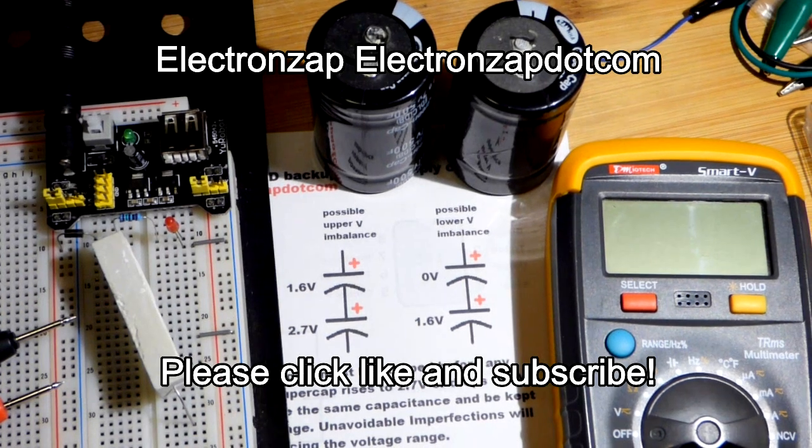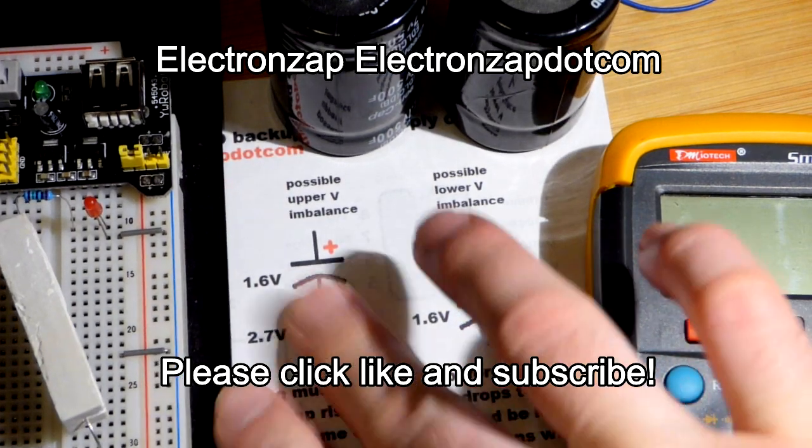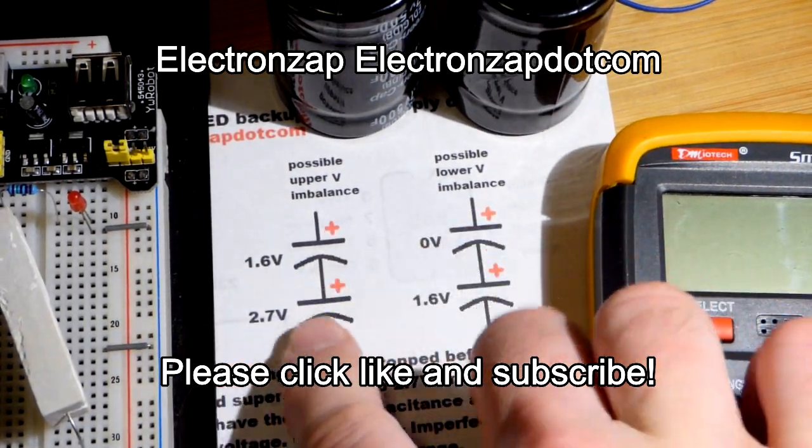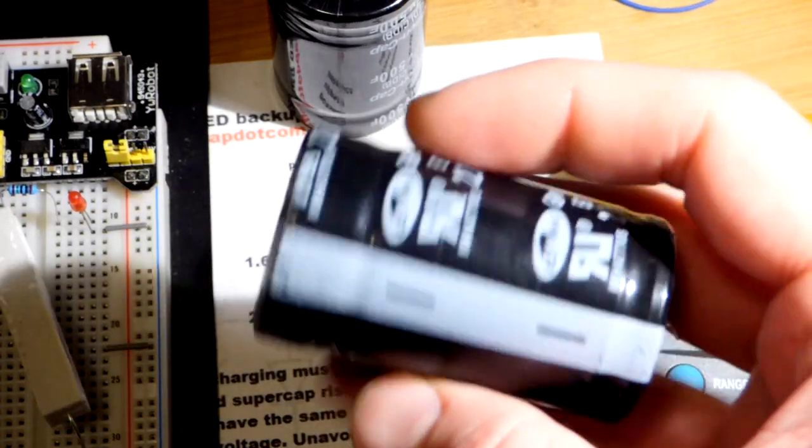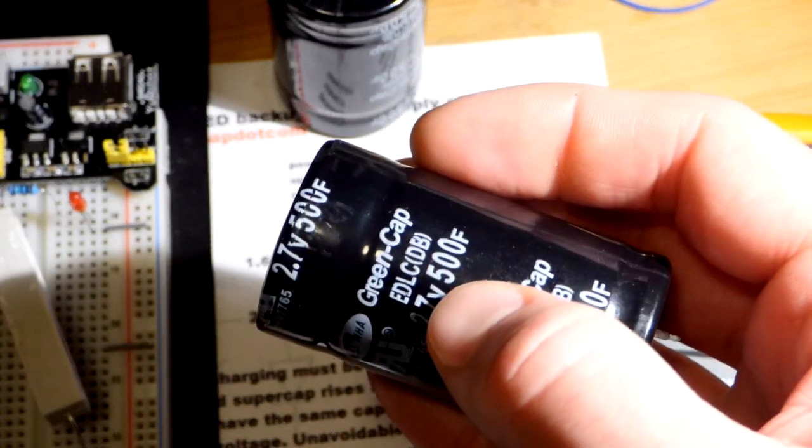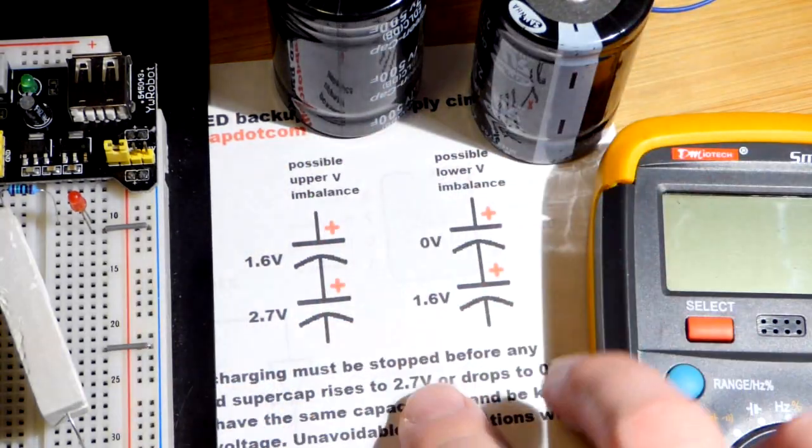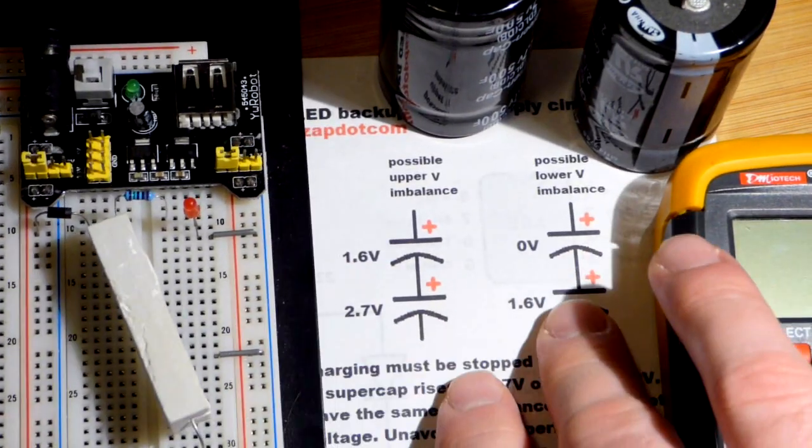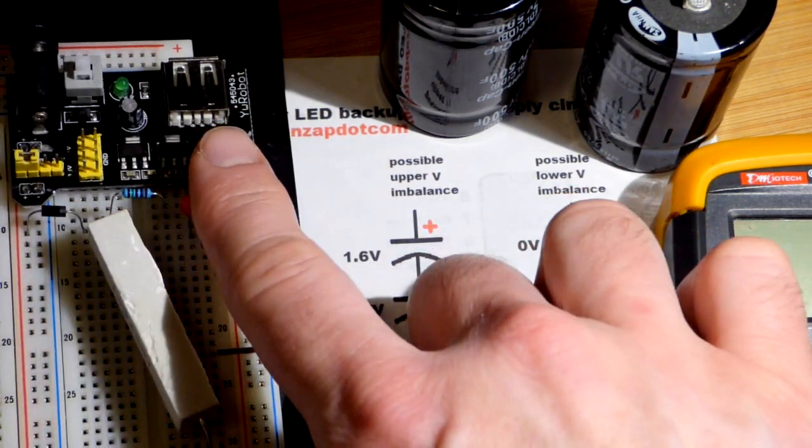In the last couple videos I talked about capacitors in series. These are super capacitors, only rated for 2.7 volts, and I want to charge them in this circuit to 4.3 volts.